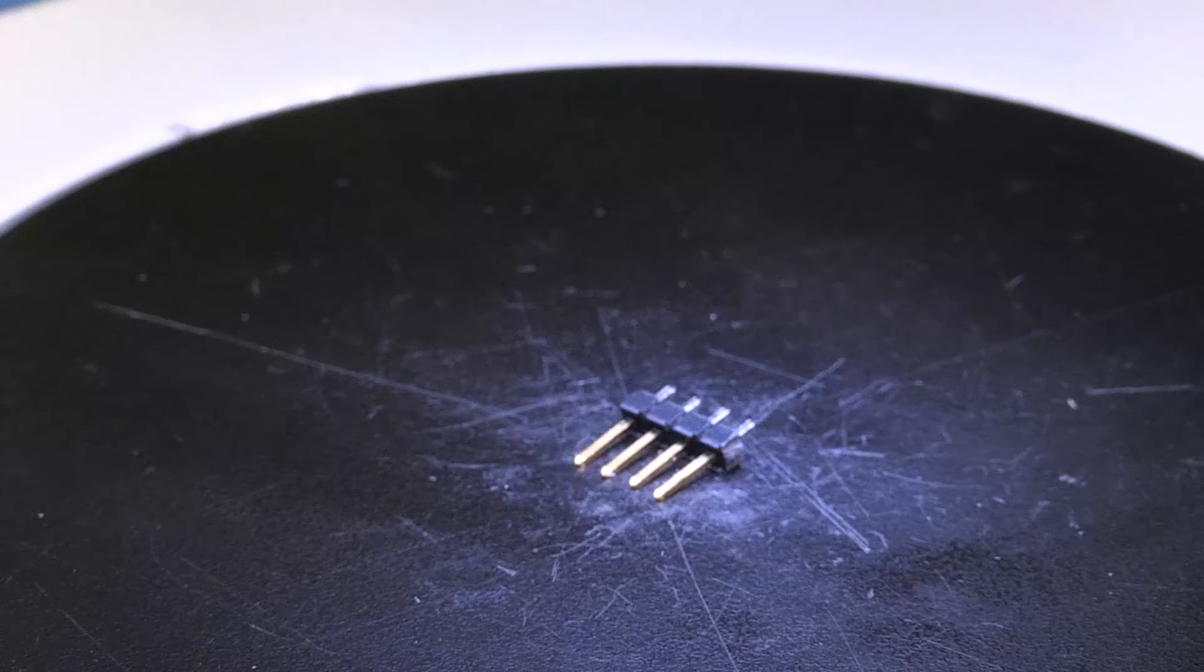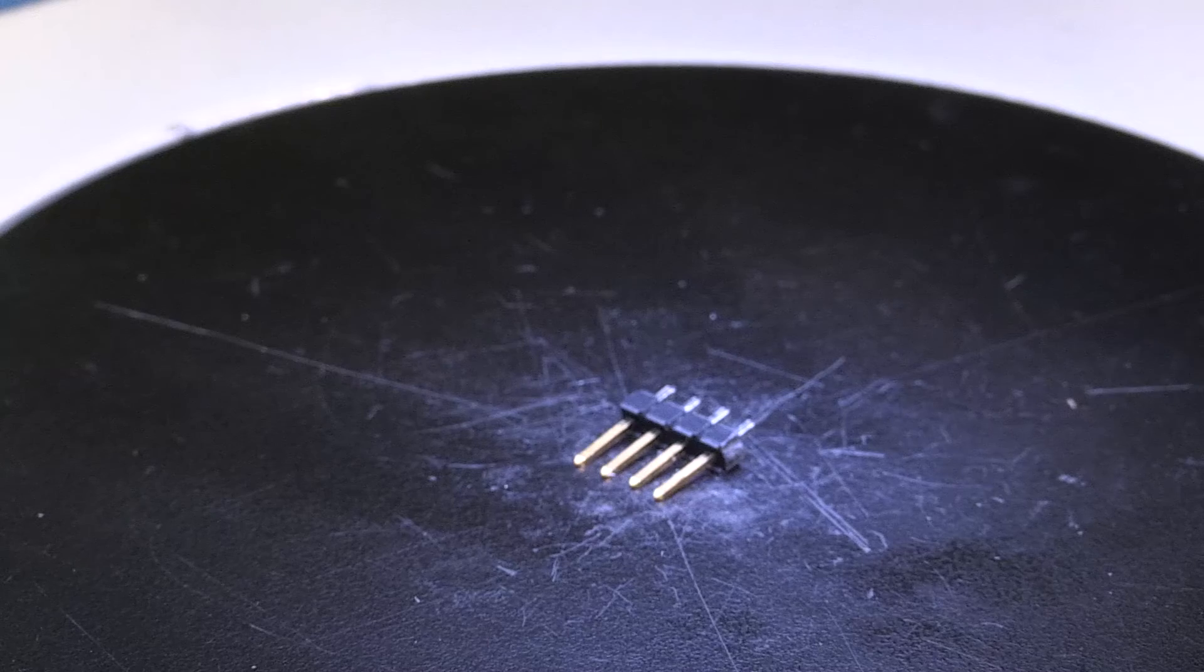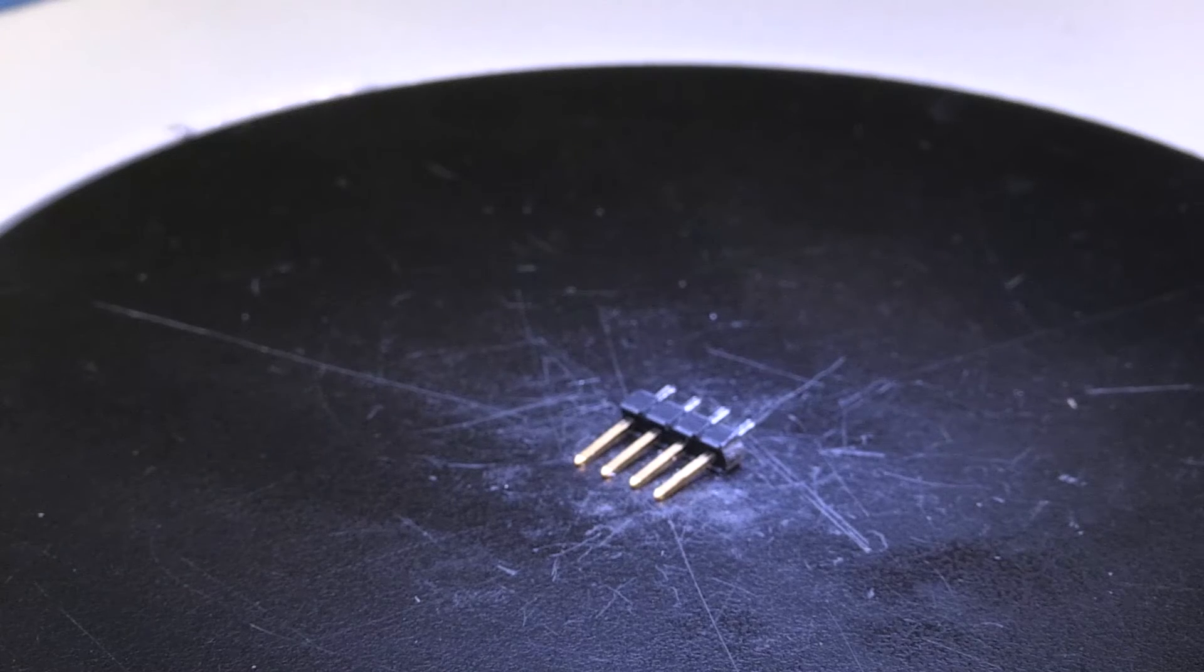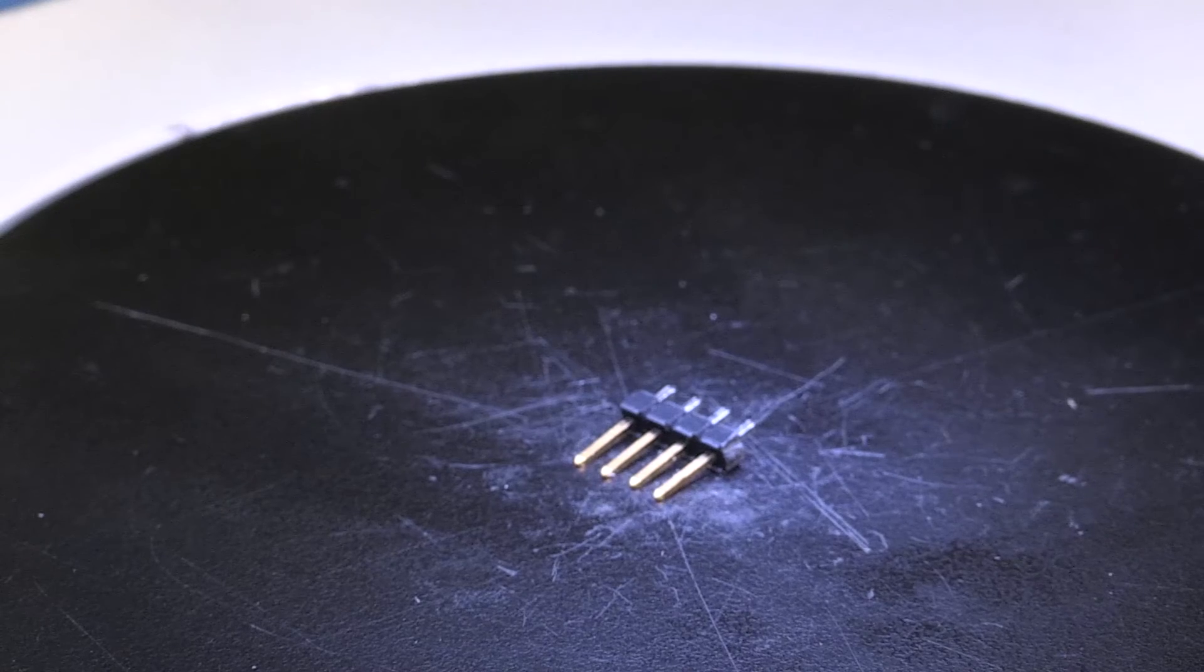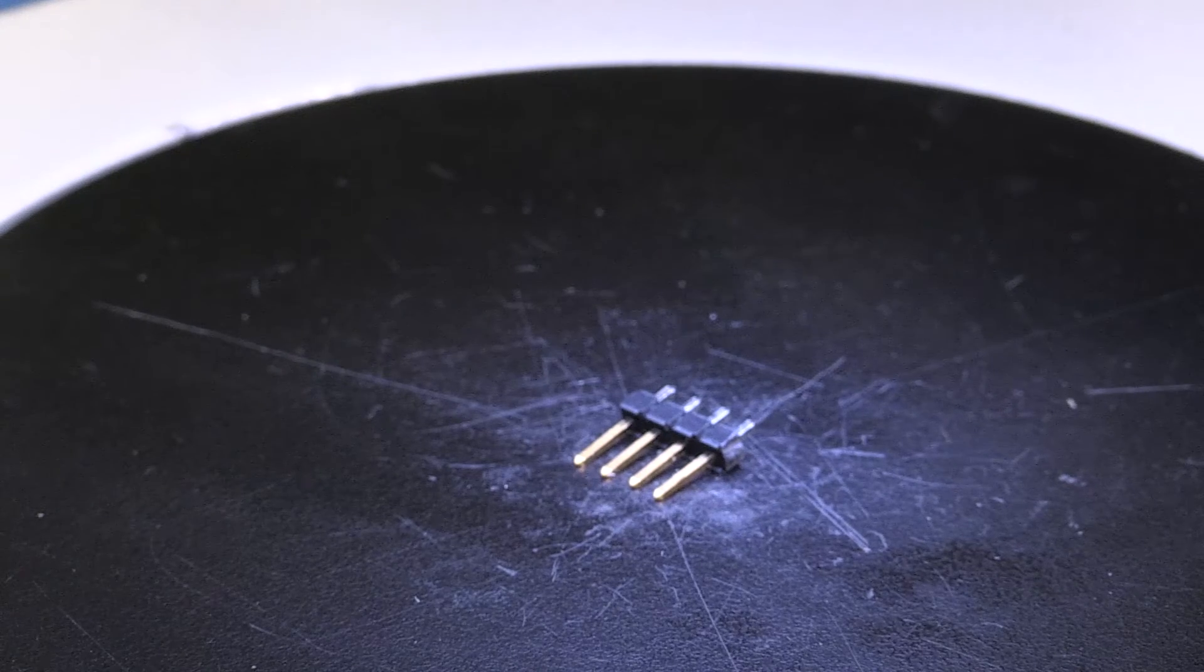Now there's a third type of connection on this board and that uses standard 100 mil spacing square pins. These pins are typically provided in this type of header strip which can be cut apart to yield the number of pins desired for the particular application.